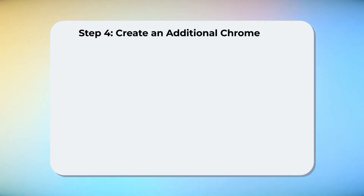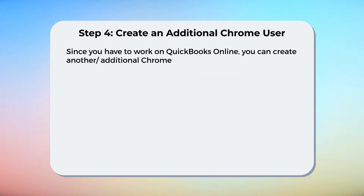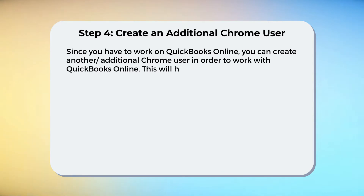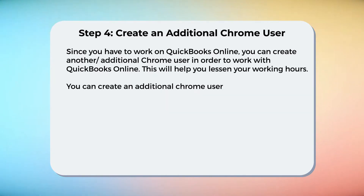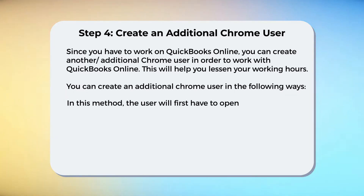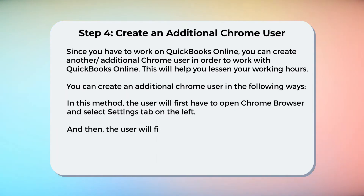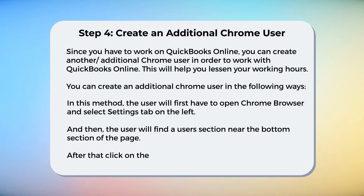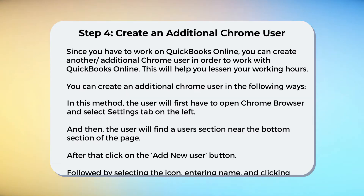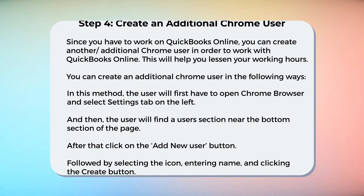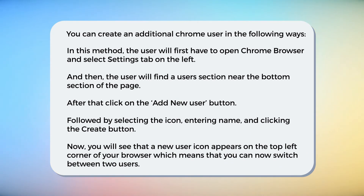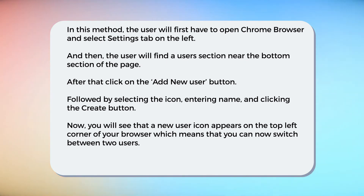Step 4: Create an additional Chrome user. Since you have to work on QuickBooks Online, you can create another additional Chrome user in order to work with QuickBooks Online — this will help you lessen your working hours. To do so, open the Chrome browser and select the Settings tab. Find the User section near the bottom of the page, then click on the Add New User button. Select an icon, enter a name, and click the Create button. A new user icon will appear in the top left corner of your browser, meaning you can now switch between two users.